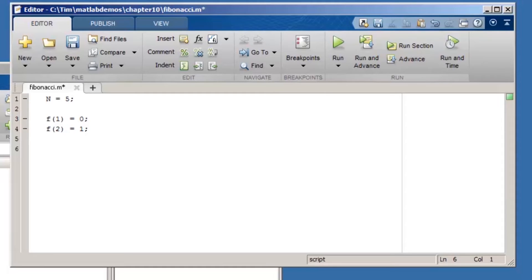Now I can create my for loop. So the word for, space k, which is going to be my index variable, equals 3 colon n. So I'm going to start at the third element of the array and end at the nth element. The kth element, f of k, is equal to f of k minus 1 plus f of k minus 2. That's all I need to do inside my for loop. So end ends the for loop.